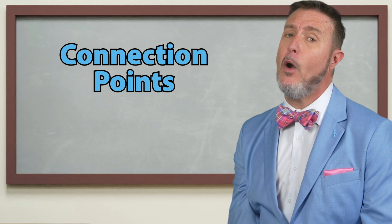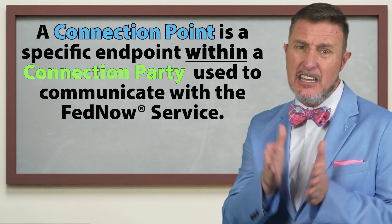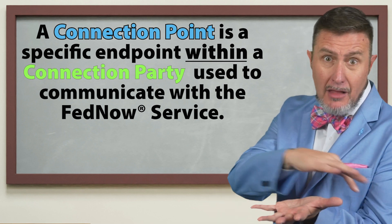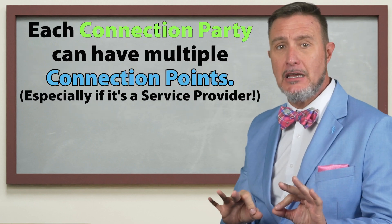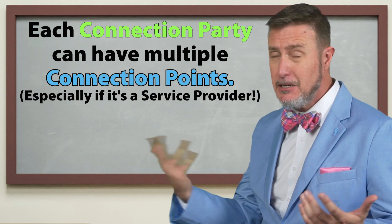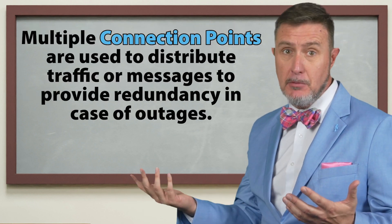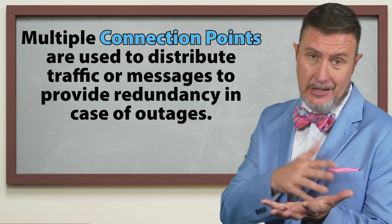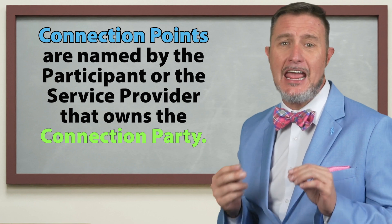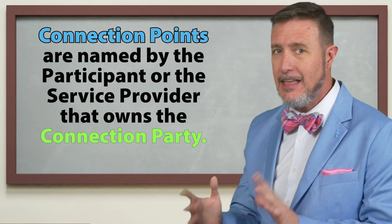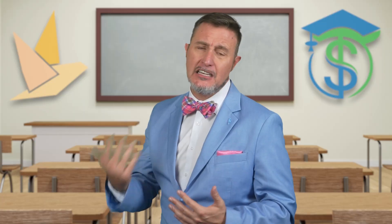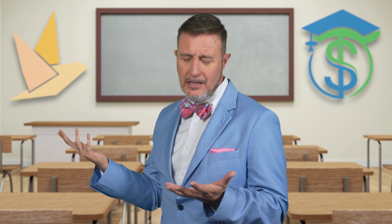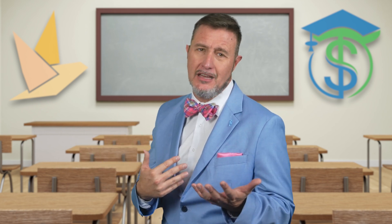But then there are connection points. A connection point is a specific endpoint within a connection party — so one party connects the FedNow service with a lot of different endpoints. Each connection party can have multiple connection points, especially if it's a service provider, which can be used to distribute traffic or messages and provide redundancy in case of outages if you have multiple ones set up. Connection points are named by the participant or provider that owns the connection party, and they are configured and managed by the Federal Reserve Banks. They're really important just to make sure the Fed knows who to send to and who they're receiving from.